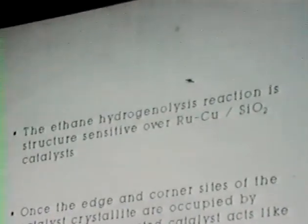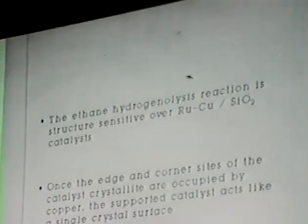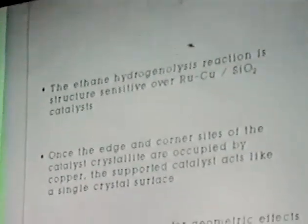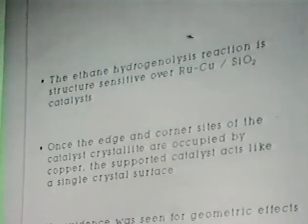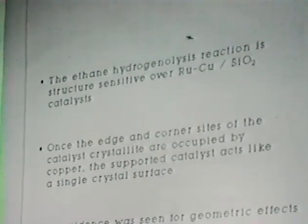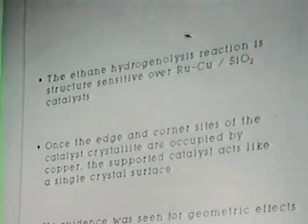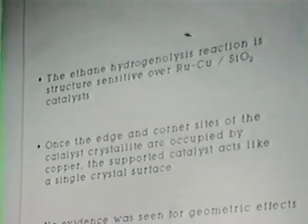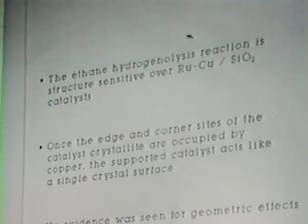In conclusion, ethane hydrogenolysis is a structure-sensitive reaction — the activity changes dramatically as we add copper that primarily populates edge and corner sites. But once those sites are populated, it looks like a single crystal system with no geometric effects. Furthermore, even if this reaction were influenced by geometric considerations, we would not see it with copper-ruthenium because the mixing properties of that system do not allow the production of small ruthenium ensembles. Thank you.